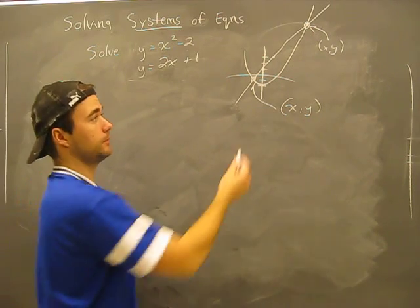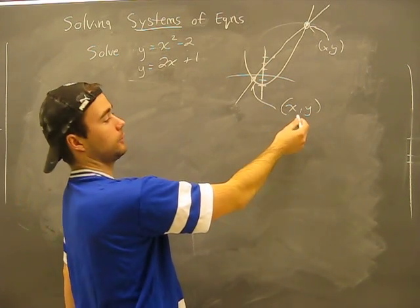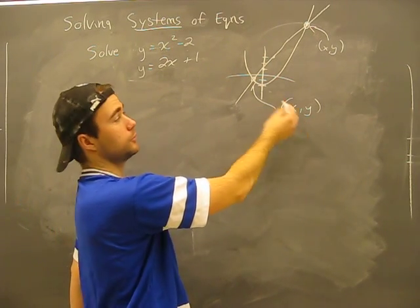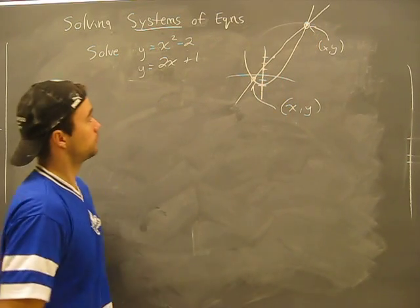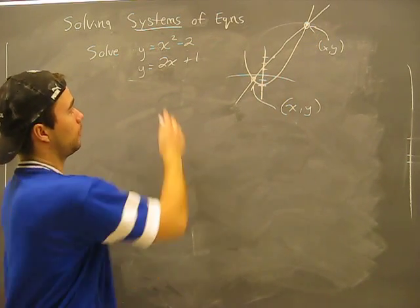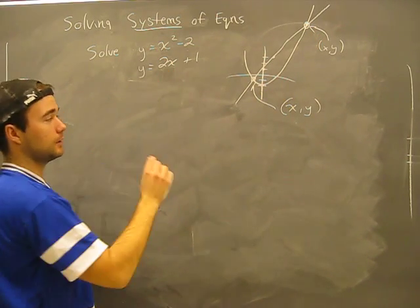What you can see from that is that you're going to get two solutions — there are two crossover points here. Two crossover points.